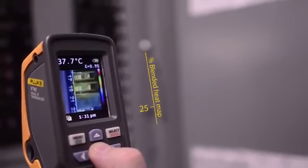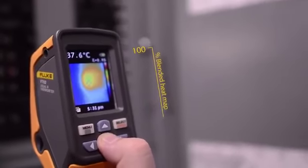The Fluke VT04 requires no training. You simply turn it on and with one button you can adjust the thermal heat map overlay in 25% increments.